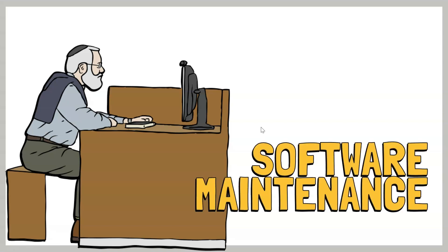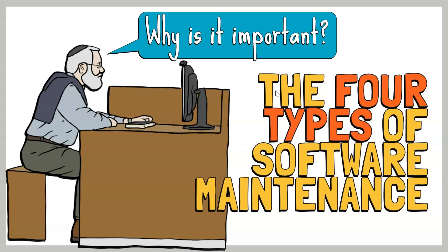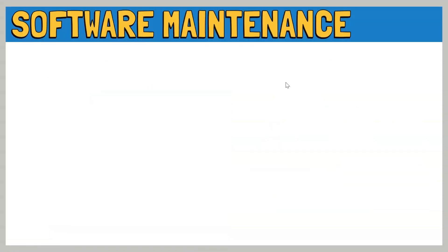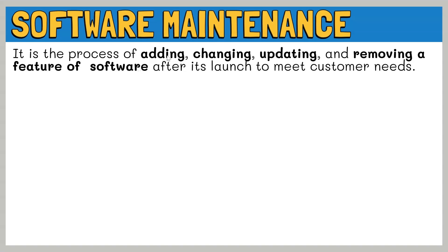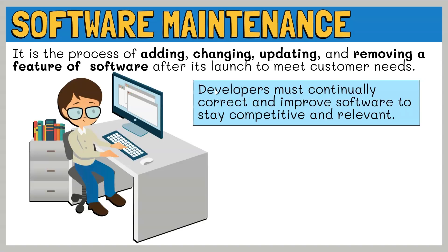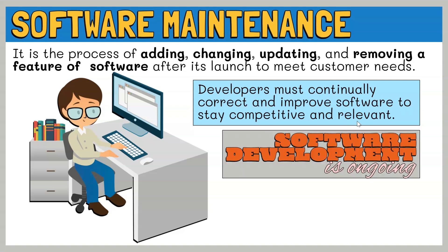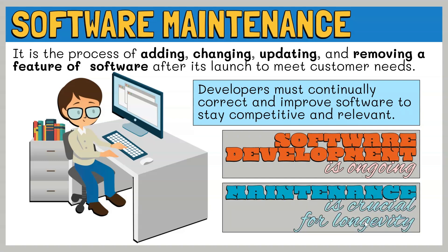In this video, I will discuss what software maintenance is, why it is important, and what are its four types. Software maintenance is a process of adding, changing, updating, and removing a feature of software after its launch to meet customer needs. As long as the software is in use, developers must continually correct and improve it to stay competitive and relevant. In essence, software development is ongoing and maintenance is crucial for the software's longevity.